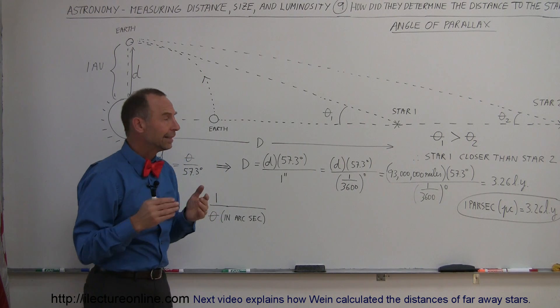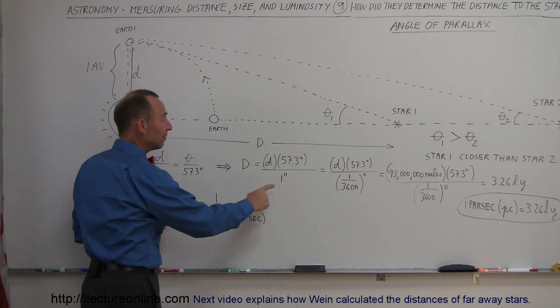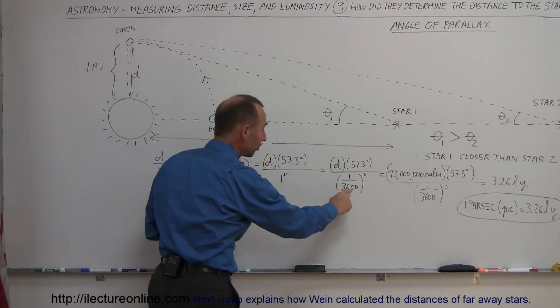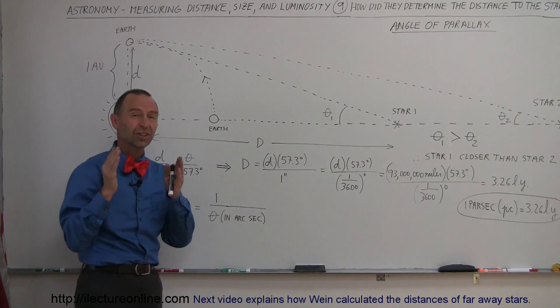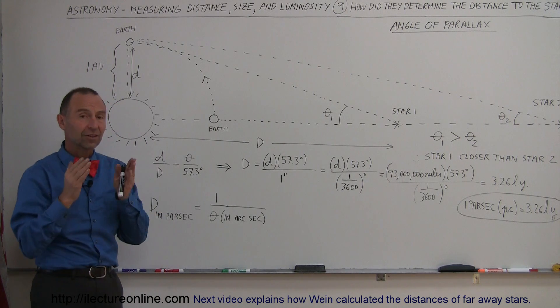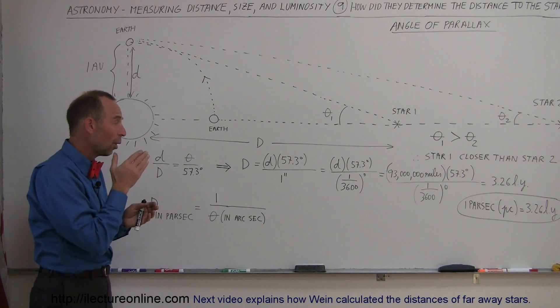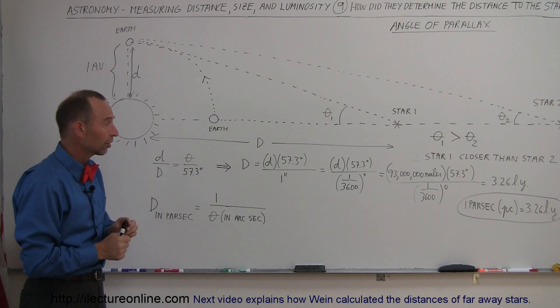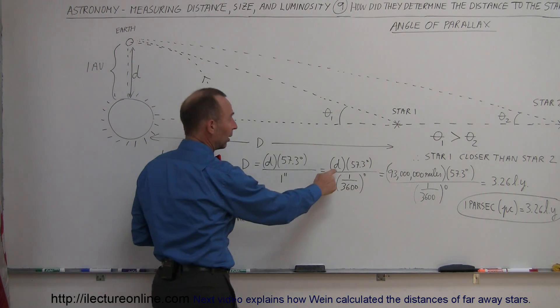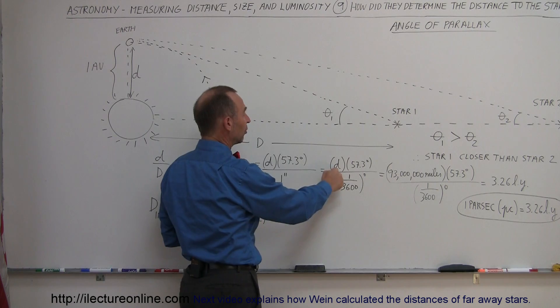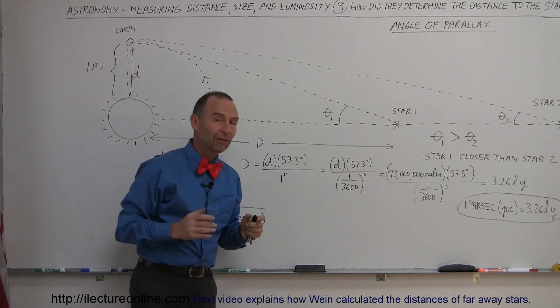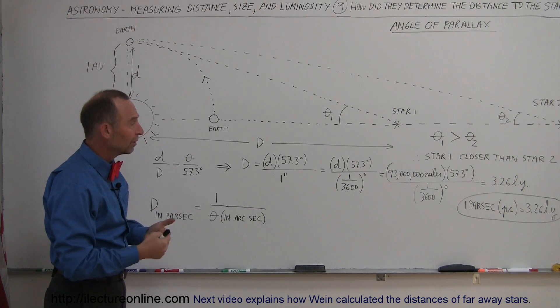Now, of course, these angles are very, very small. For example, if the angle was exactly one arc second, which is one 3600th of a degree. Remember there are 60 seconds in an arc minute and 60 arc minutes in a degree, so it would be 3600 arc seconds in one degree. So we take one of those arc seconds as a measurement, we divide that into the distance between the Sun and the Earth, multiply that times 57.3, which is the number of degrees in a radian,